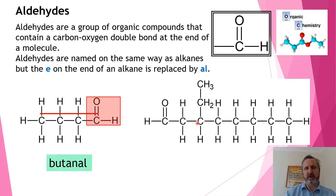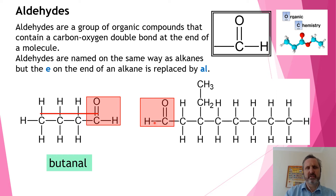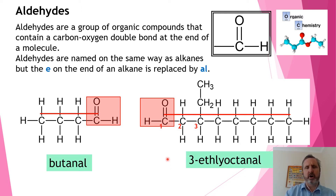Here's another aldehyde. The chain length here is eight carbons, with our functional group on the end, so this is octanal. But it has a substituent group coming off the third carbon. Once we number this, we call it 3-ethyloctanal. That's how we name and recognize aldehydes — double bond O, end of a molecule, it will have the ending AL.